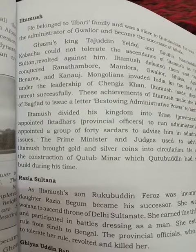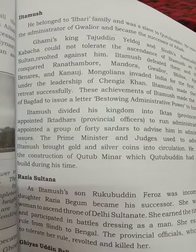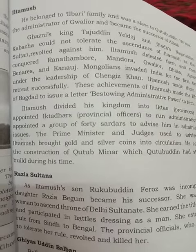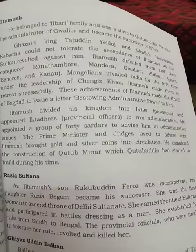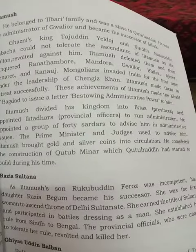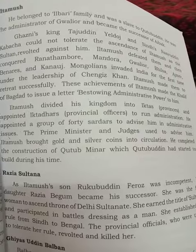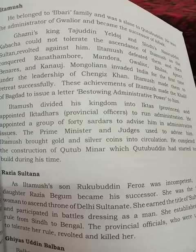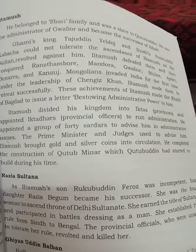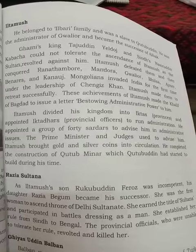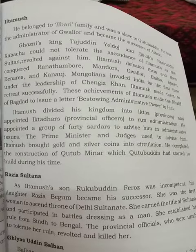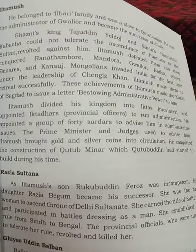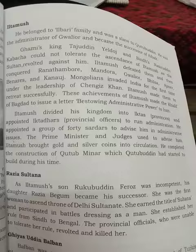The third ruler is Razia Sultana. As Iltutmish's son Rukbuddin Feroz was incompetent, his daughter Razia Begum became his successor. She was the first woman to ascend the throne of the Delhi Sultanate and earned the title of Sultana.